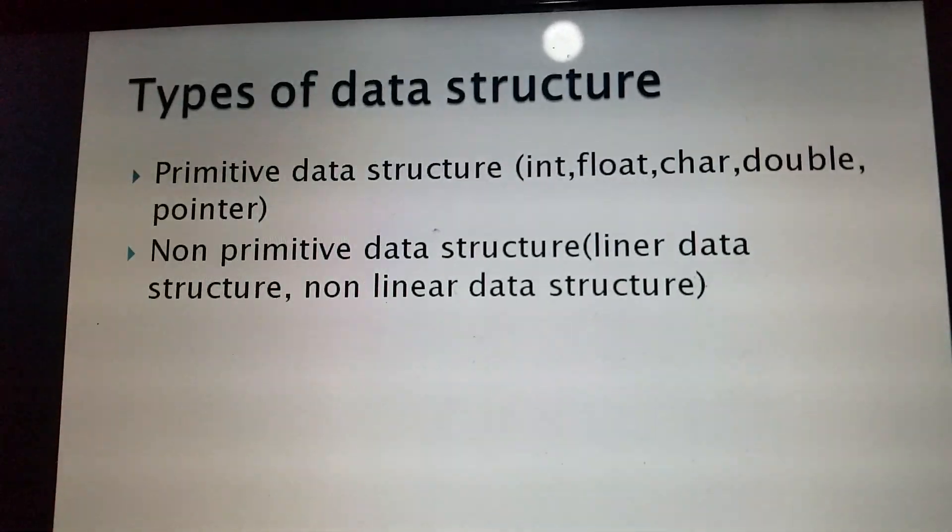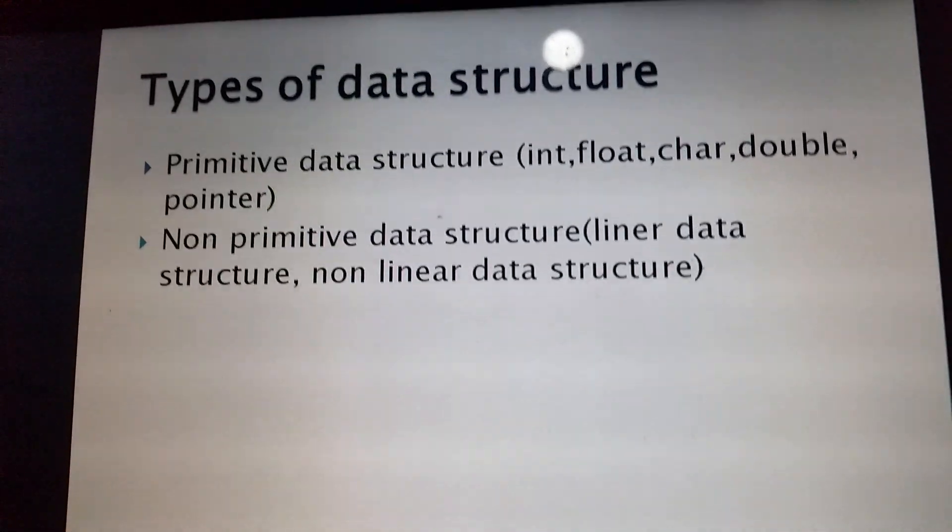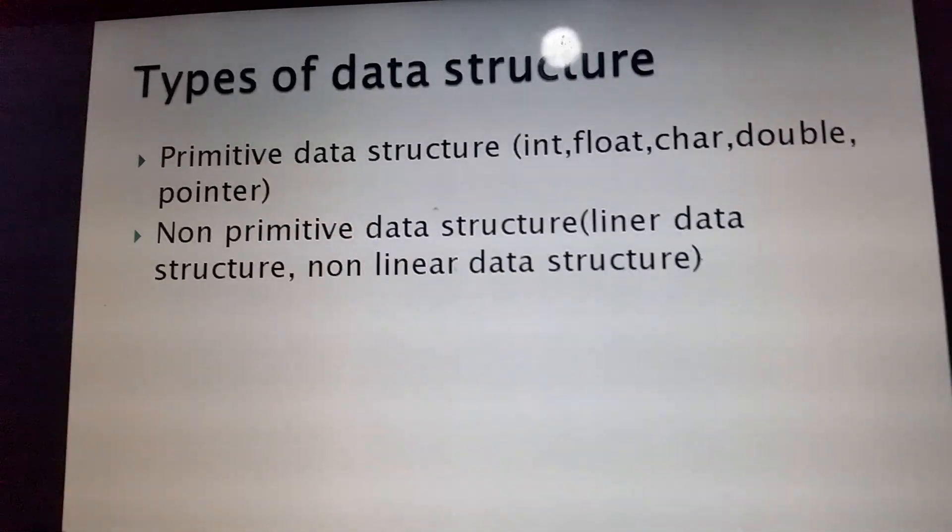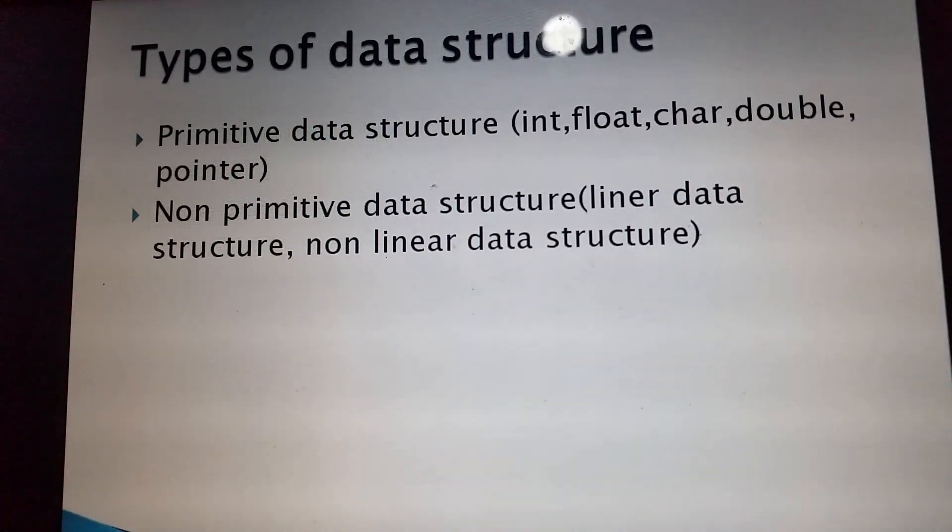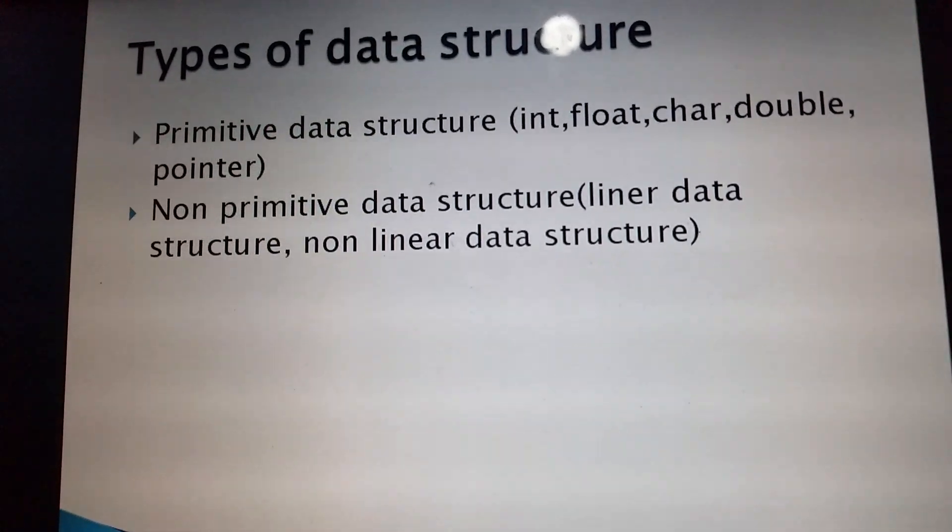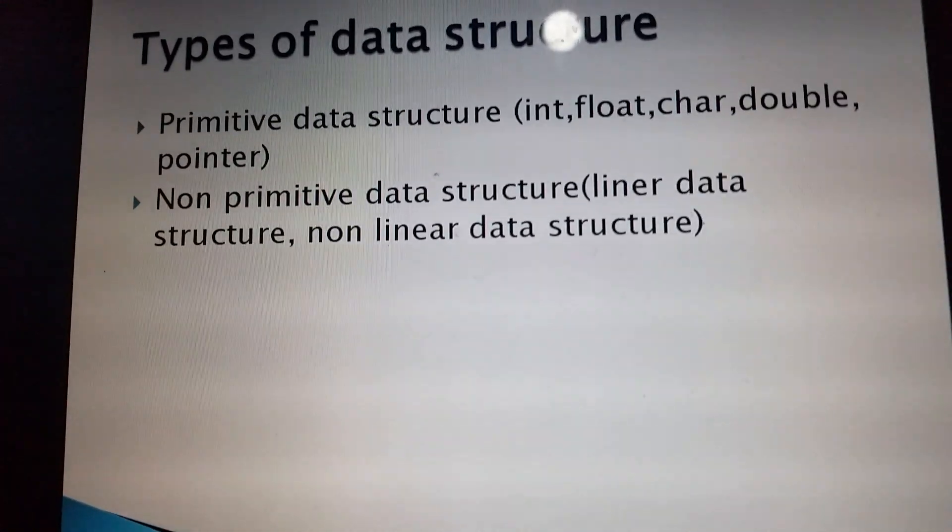We have types of data structure. The primitive data structure: examples are integer, float, character, double, and pointer. We have the non-primitive data structure: examples are linear data structure and non-linear data structure.